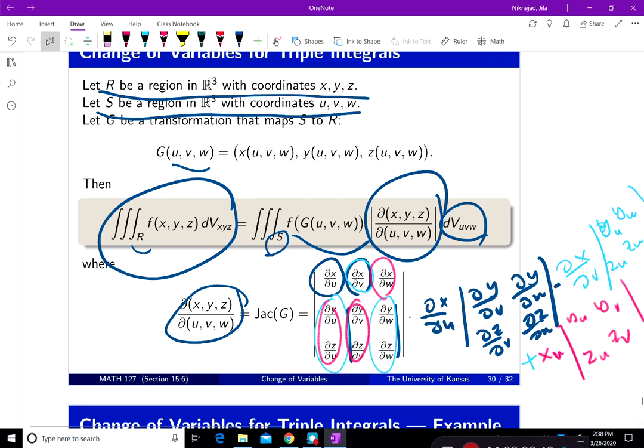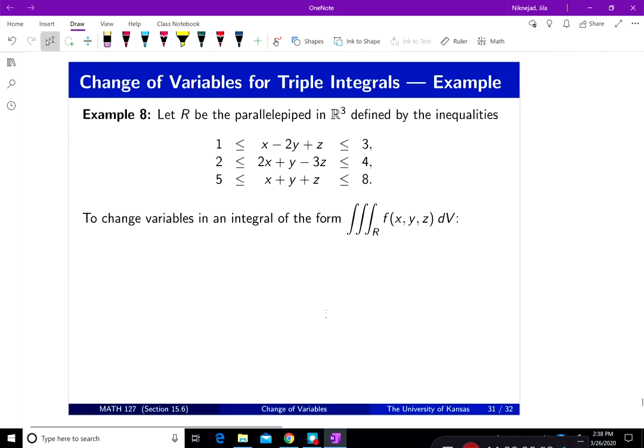So let's do an example on that—change of variable for triple integral. This is the example. This time we're saying that the region is between the plane that equals 3 and that equals 1, and the plane this equals 4 and this equals 2, and the plane that equals 8 and that equals 5. Basically, instead of lines that we had before, now we have planes.